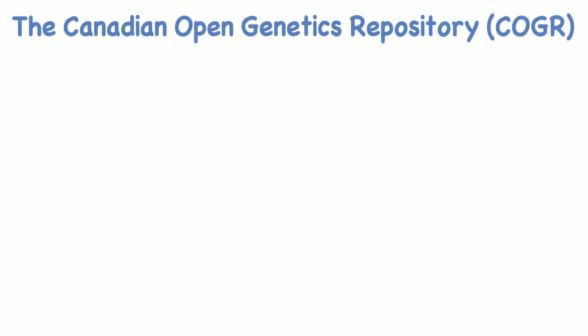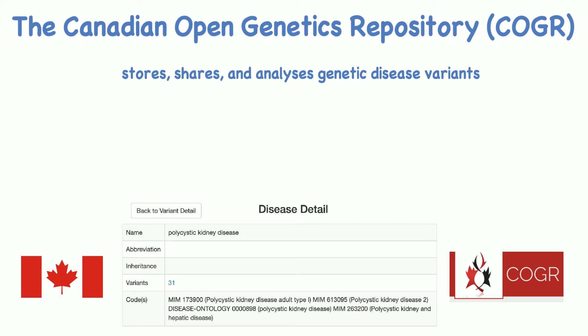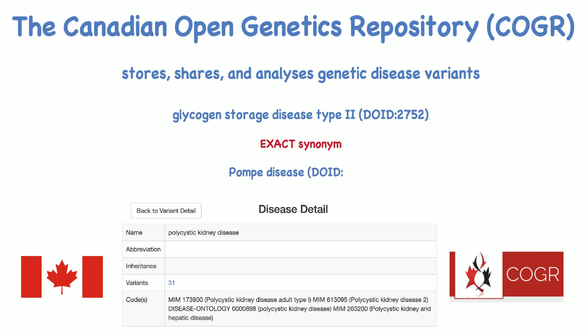The Canadian Open Genetics repository collects, stores, shares, and analyzes genetic disease variants reported by medical diagnostics laboratories across Canada. Clinically significant variants were linked to Human Disease Ontology disease terms to avoid redundant disease naming, for example the synonymous terms glycogen storage disease type 2 and Pompe disease.